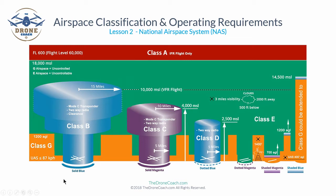The center of Class B airspace extends from the surface outward about five nautical miles and then upward to approximately 10,000 feet MSL on average. Some classes could extend to 11,000 feet or only to 10,000 feet — the same applies to Class C and Class D airspaces — depending on natural terrain.